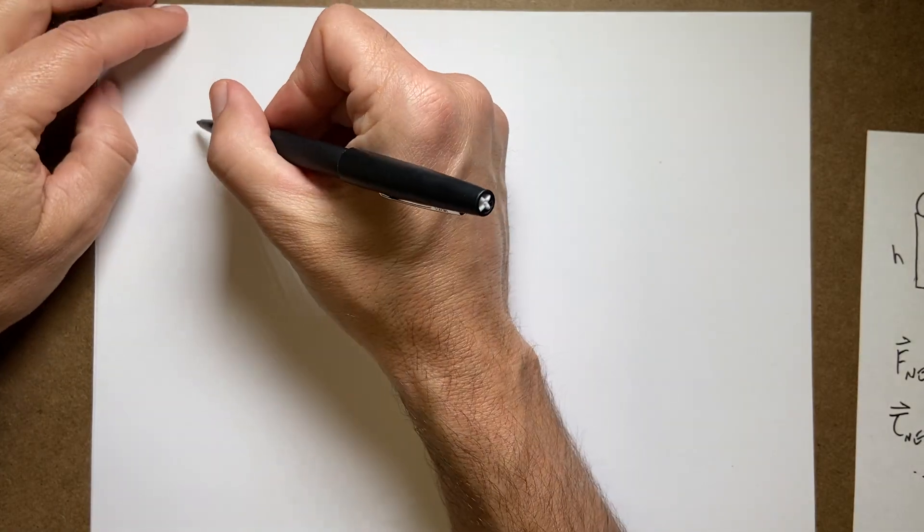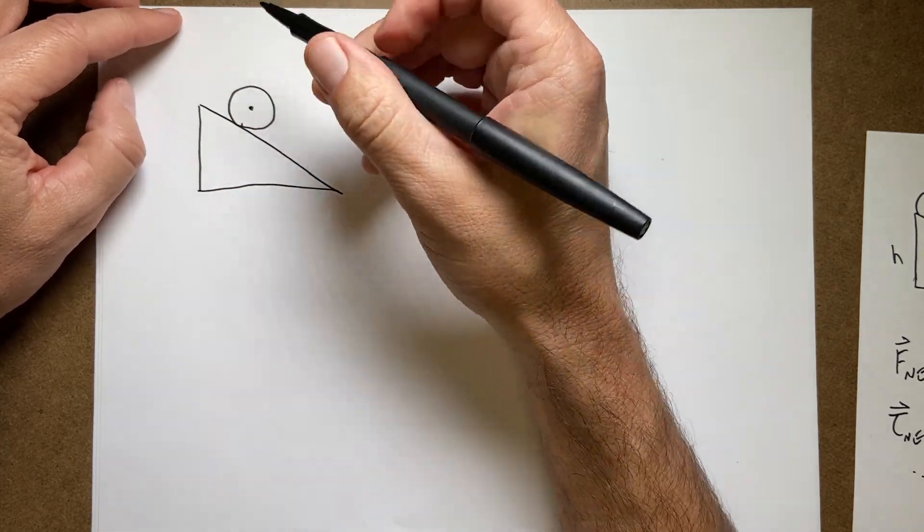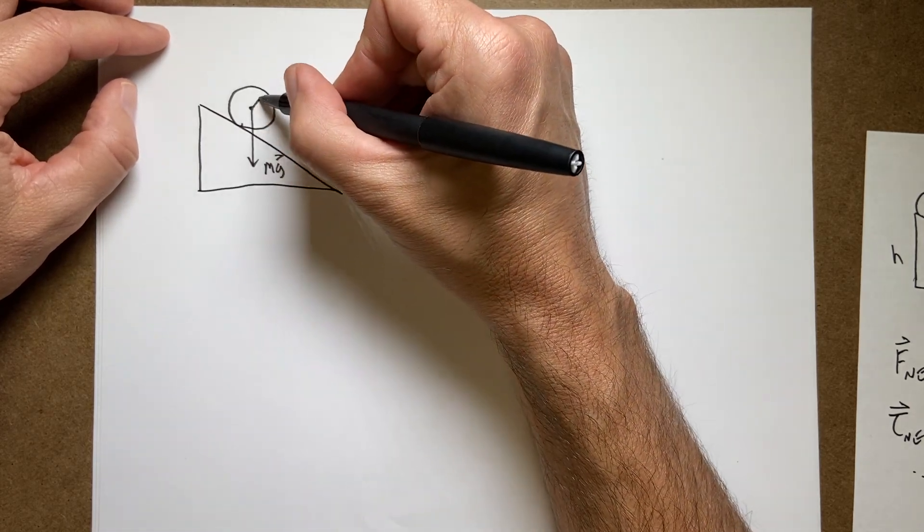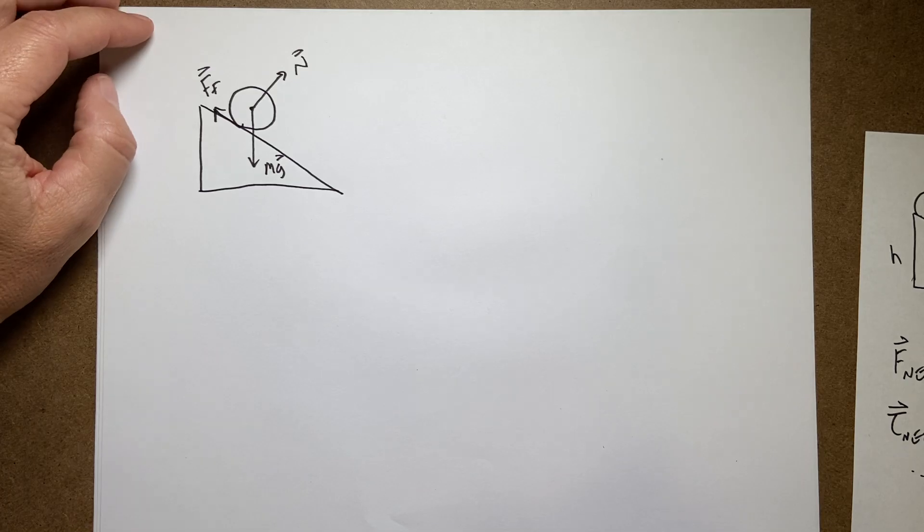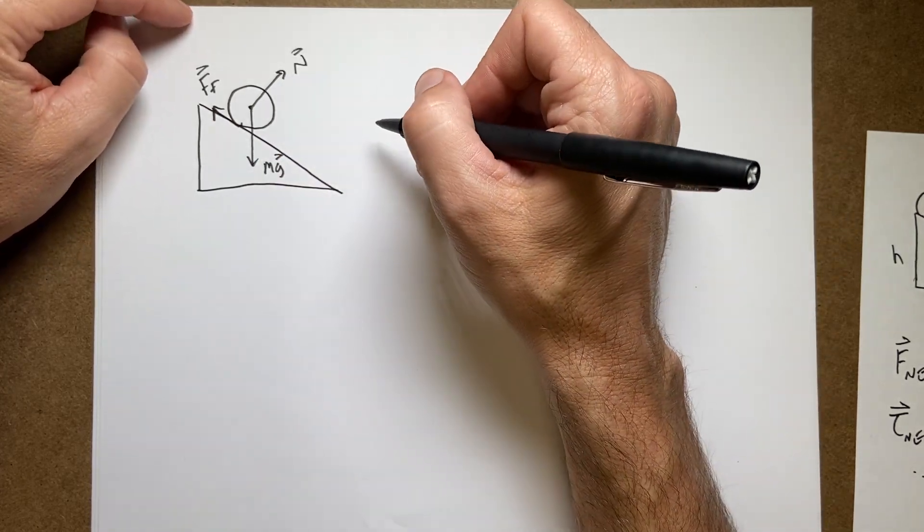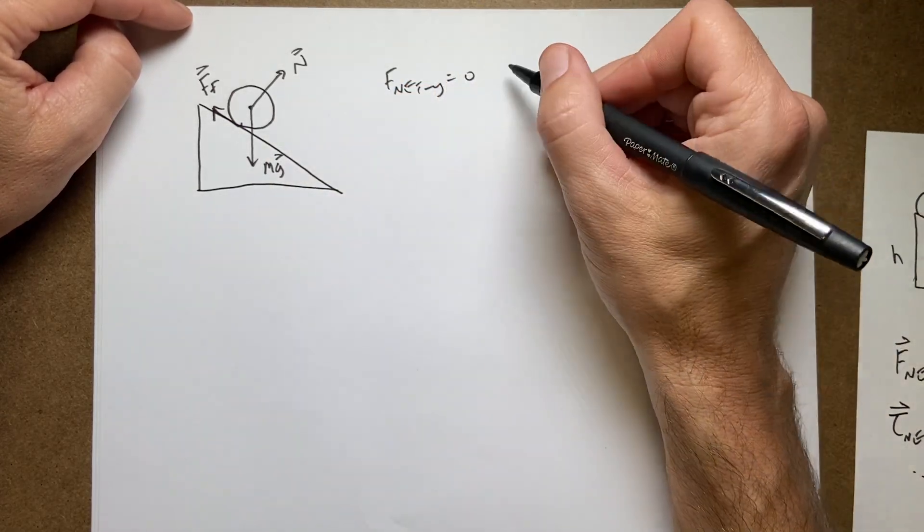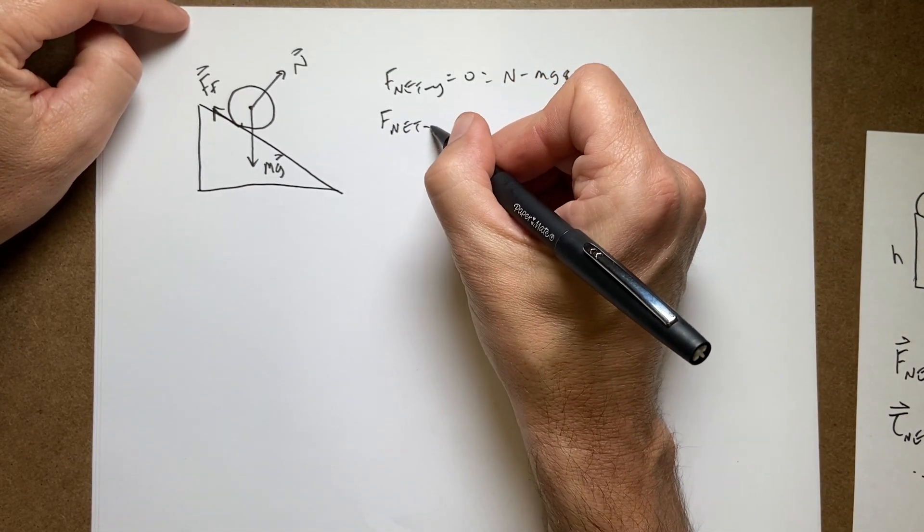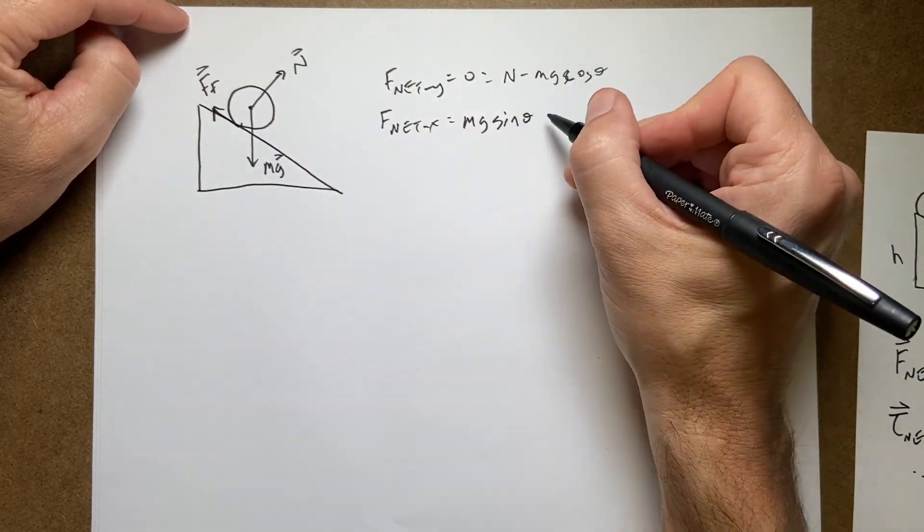Now let's look at the cylinder. So I have three forces acting on this one. I have the gravitational force, I have the normal force, and then I have this backwards pushing frictional force. So in this case, I could do the same thing. The net force in the x direction, the net force in the y direction, F net y equals zero. And it would be the same thing, n minus mg cosine theta. Now for the x direction, F net x equals mg sine theta, just like before, but then I have that frictional force, minus the frictional force.